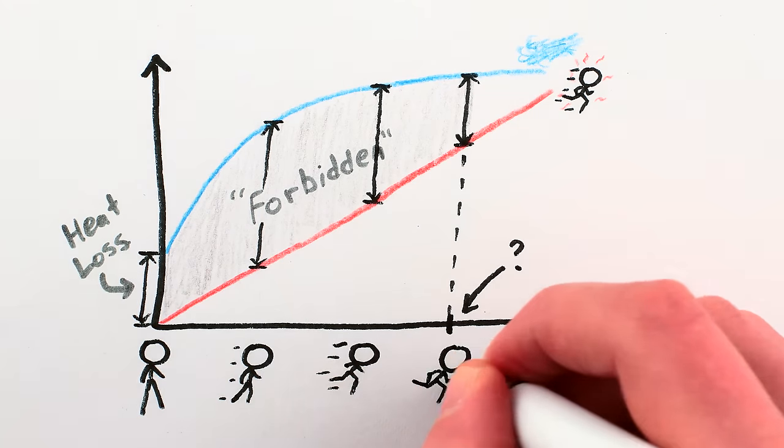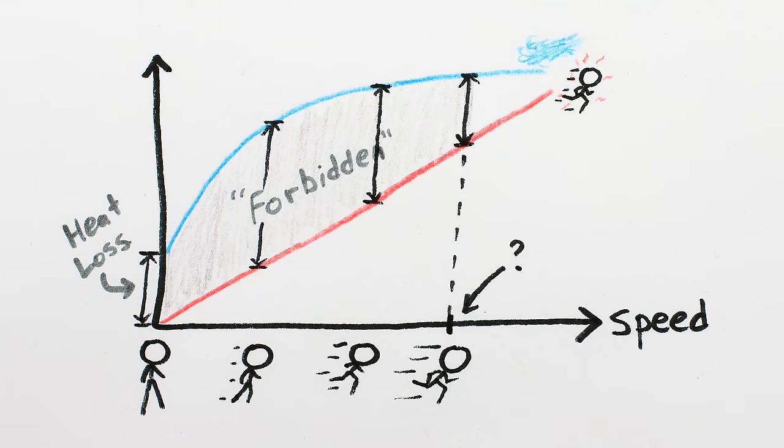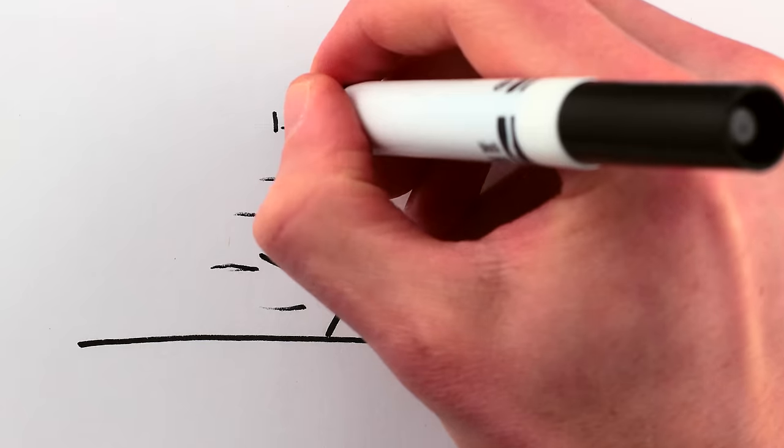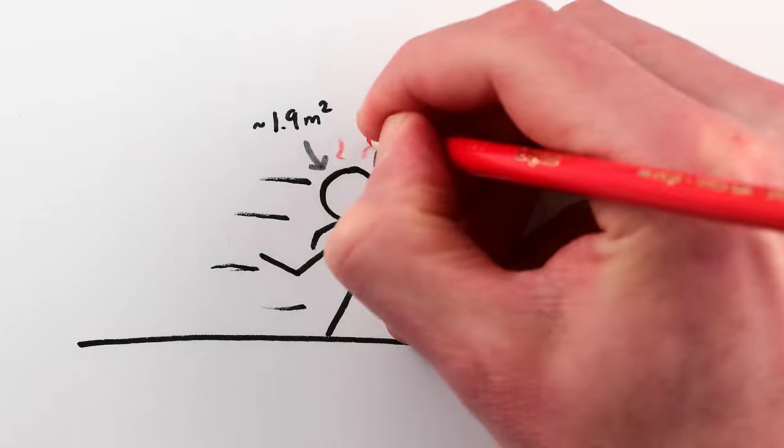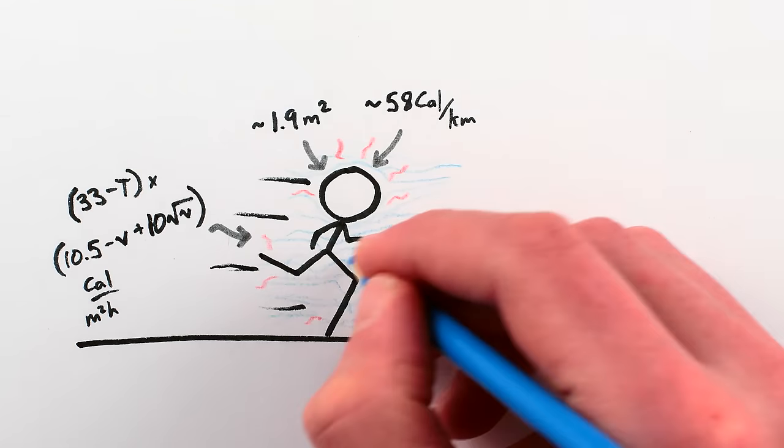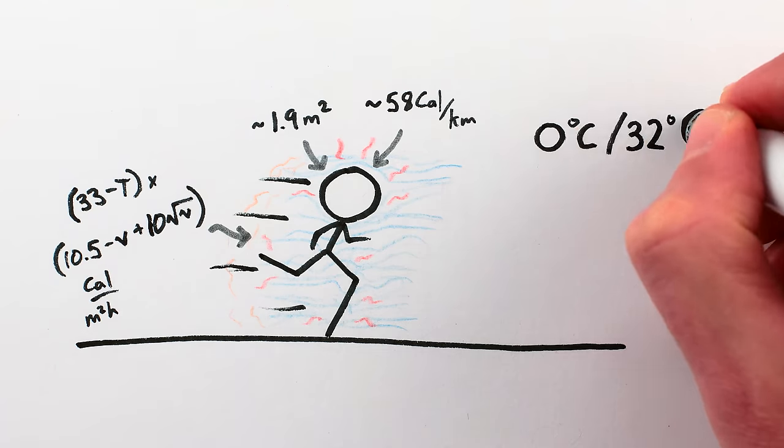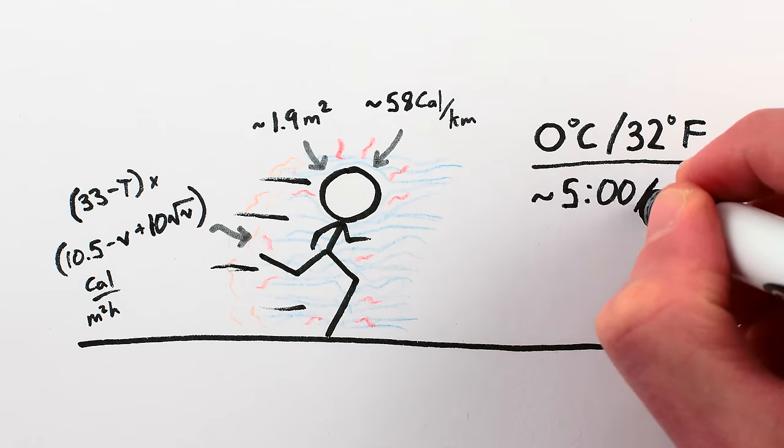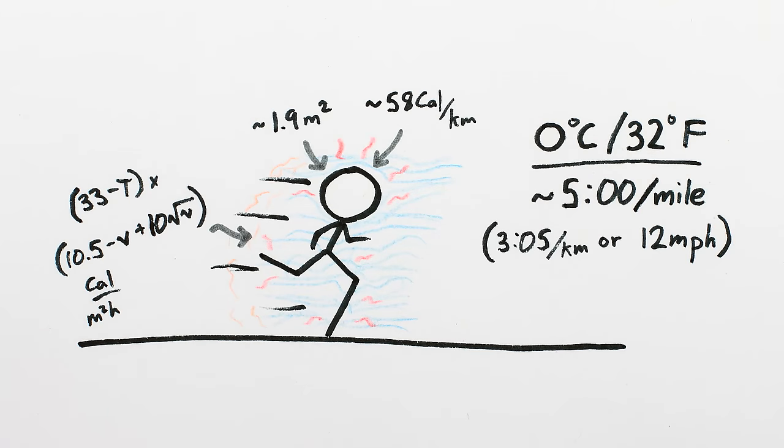So what's the minimum speed where the heat you generate running finally balances out the additional heat you lose due to air movement? Well, using some estimations for the surface area and energy generation of an adult human running naked, and the effects of wind on heat loss, I found that when it's freezing outside, you need to be able to run roughly a five-minute mile to be better off moving than staying put. Faster if it's colder out.